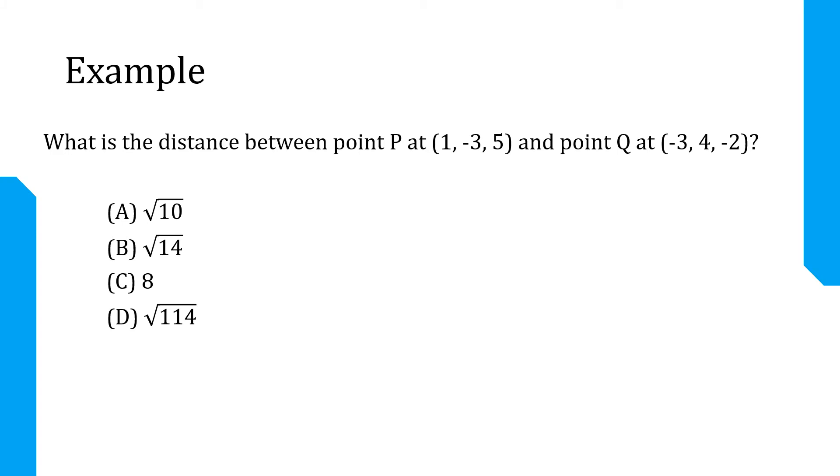Let's get right into an example problem because I think that's the best way to show how these formulas and concepts are applied in real-world scenarios. We're asked to find the distance between point P which is at the coordinate system (1, -3, 5) and point Q which is at (-3, 4, -2). Now pause the video here if you'd like to attempt to solve this problem on your own.